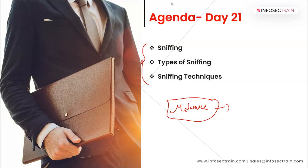When you hear the word 'sniffing,' the first thing that comes to mind might be a police dog sniffing something. That analogy is actually quite relevant. In penetration testing, data is like gold. In the modern environment, we always say data is the new gold, and attackers are trying to get their hands on data that is traveling across networks.